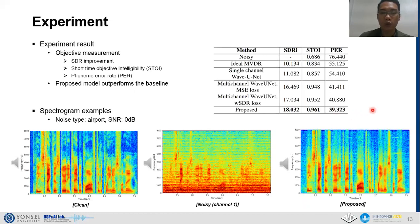This slide shows the experiment results of our paper. We measure the performance of our model with three objective measurements: signal to distortion ratio improvement, PESQ, and word error rate which is calculated via using pre-trained Listen, Attend, and Spell model. The table shows our proposed model outperforms the baseline. This is the spectrogram and audio sample of the noise type airport and the SNR equals zero.